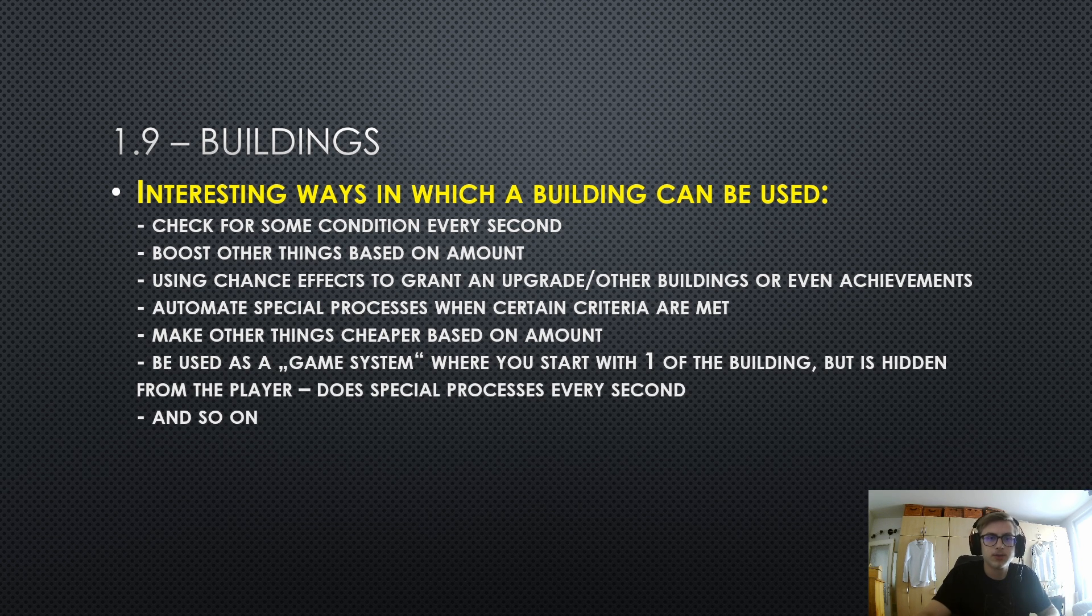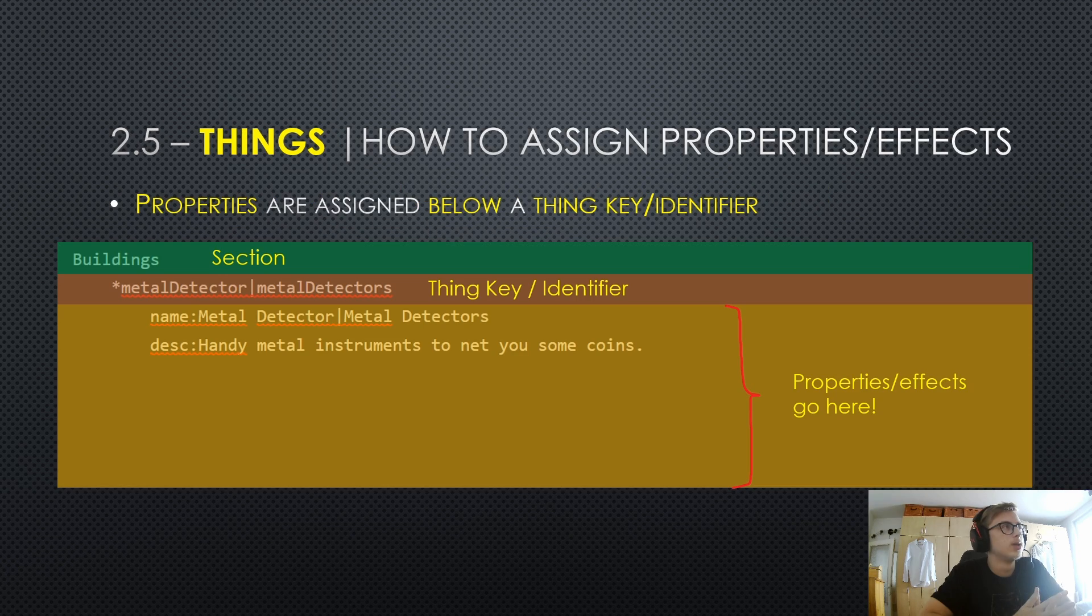How do we assign properties or effects to a thing? Properties are assigned below a thing key or the identifier. I have made this diagram again where we have the building section here. This is also a snippet from our code. Here we have our thing key or our identifier, which is the metal detector.